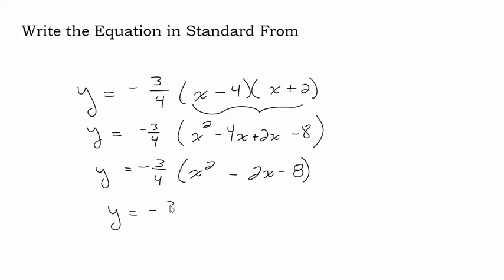And now we can distribute the -3/4 into our parentheses, and we get -3/4x² - 6/4, which would reduce down to -3/2x minus 6. And that is the equation in standard form, which is y = ax² + bx + c.